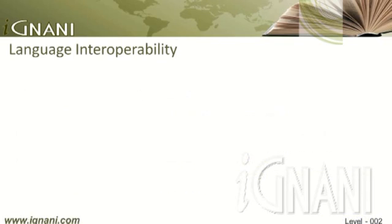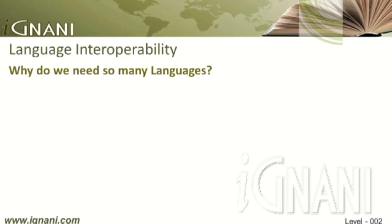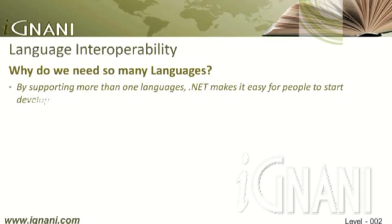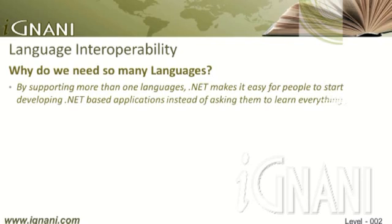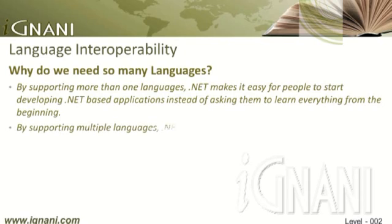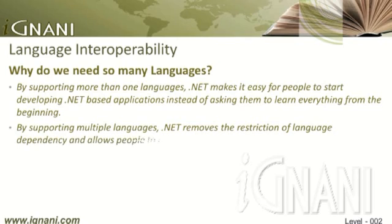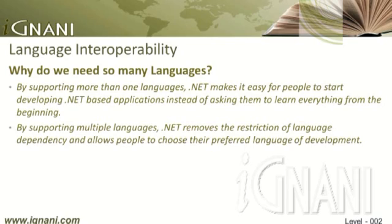You might ask: when we can develop everything in one language, why do we need so many languages? The answer is that by supporting more than one language, .NET makes it easy for people to start developing .NET-based applications instead of asking them to learn everything from the beginning. Also, by supporting multiple languages, .NET removes the restriction of language dependency and allows people to choose their preferred language of development.